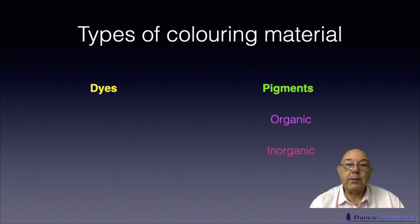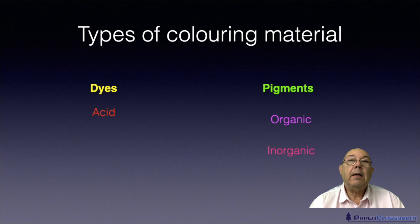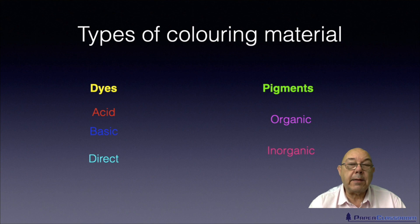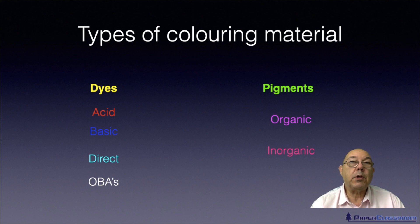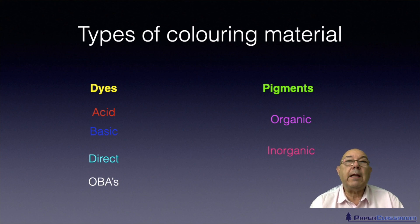And then we have dyes, and there's quite a wide range of dyes. We have acid dyes, and as you might expect if you're specifying acid dye, not surprisingly there are basic dyes — exactly the opposite. And then we have what we call direct dyes. And then there's a very special type of dye-like material called an OBA — Optical Brightening Agent. In America it's called an FWA, Fluorescent Whitening Agent. These are strange molecules that absorb UV light and then re-emit it in the blue spectrum.